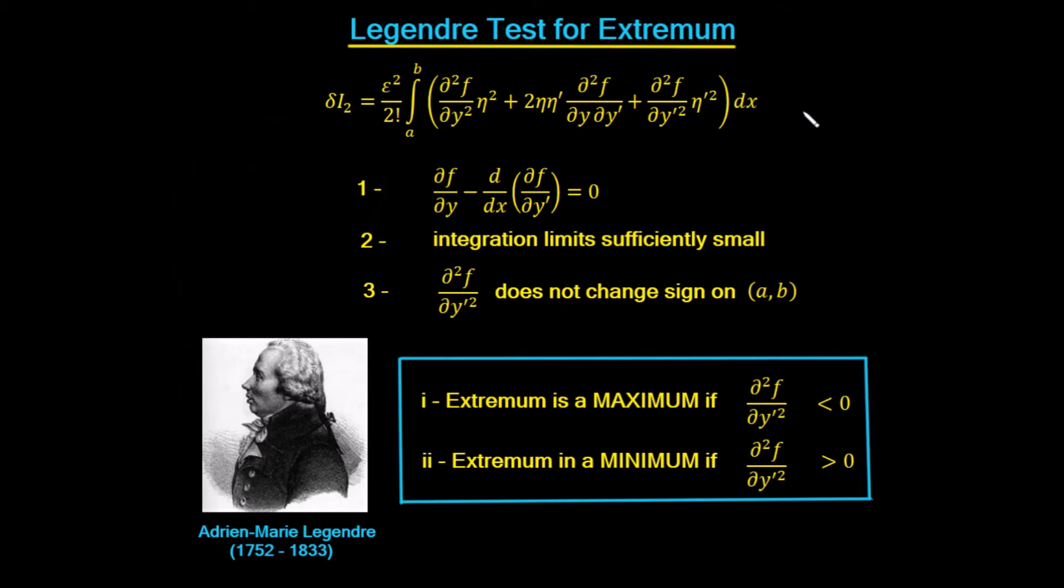And now we're trying to find out whether the second derivative is less than zero, in which case it will have a local maximum, or whether the second derivative is greater than zero, in which case it will have a local minimum.